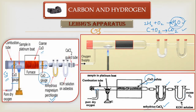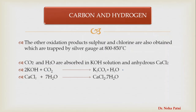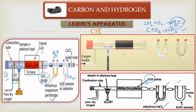Anhydrous magnesium perchlorate in the first tube absorbs H₂O. Then the gas goes to the next tube containing KOH solution, where CO₂ is absorbed. In the KOH absorption reaction, H₂O is also formed, so CaCl₂ in the next tube absorbs that H₂O as well. To summarize the reactions: KOH absorbs CO₂ to form potassium carbonate, and calcium chloride absorbs moisture to form the hydrated compound.